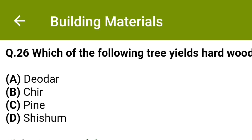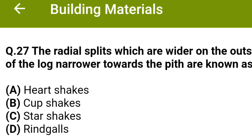Which of the following trees yields hardwood? Option A deodar, Option B sal, Option C pine, Option D sisham. The correct answer is Option D, sisham. Shakes which are wider on the outside of the log and narrower towards the pith are known as Option A heart shakes, Option B cup shakes, Option C star shakes, Option D ring galls. The correct answer is Option C, star shakes.